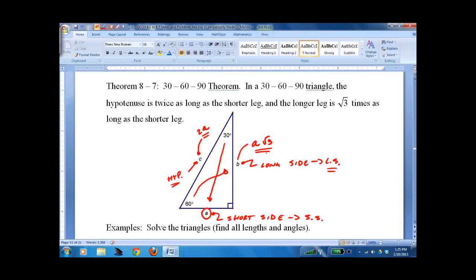So again, find the short side, double it to get the hypotenuse, multiply by root 3 to get the long side.